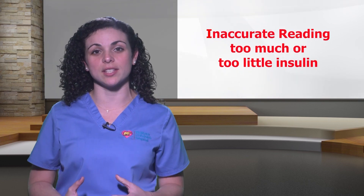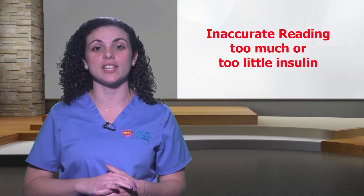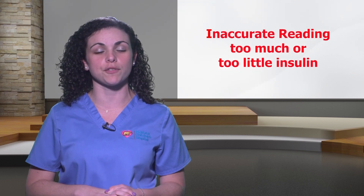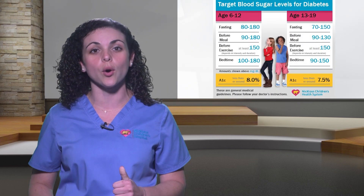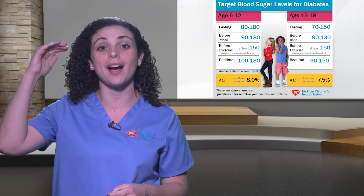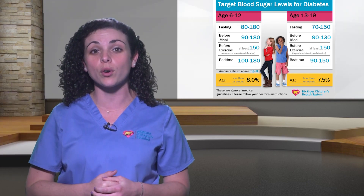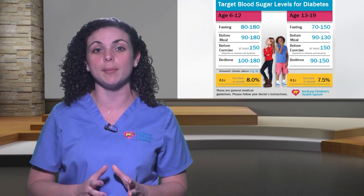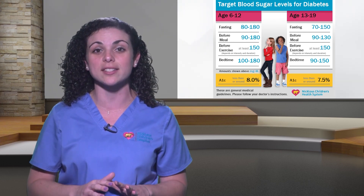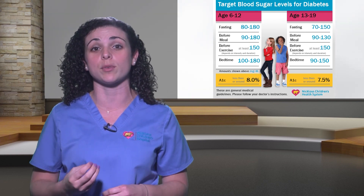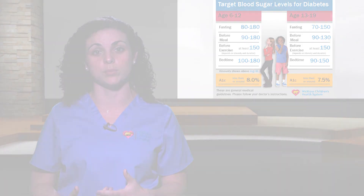An inaccurate reading can result in giving too much insulin or too little if it is needed. Here's a table showing target blood sugars for bedtime. The table shows what blood sugars are too low and need a snack, and which blood sugars are too high and need insulin, according to the child's age. Any snack given according to this table does not require insulin, unless more carbohydrates than what was recommended were consumed.